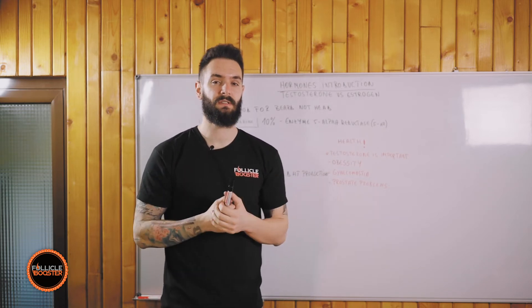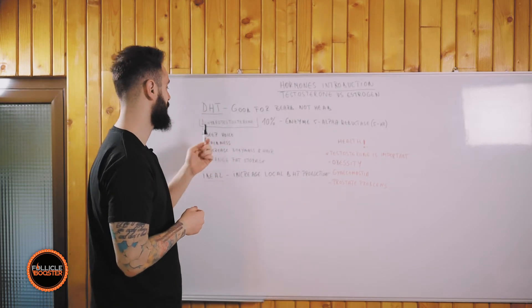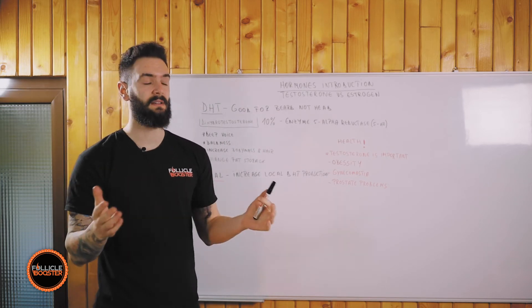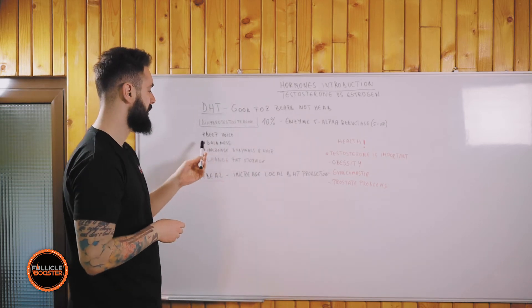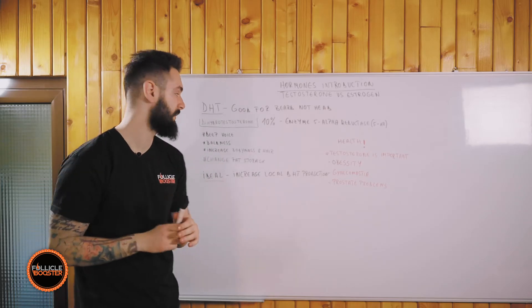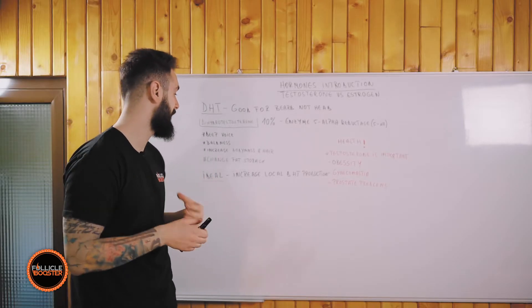You're going to understand why in the further videos, but now let me explain a little bit more in depth about DHT. The main characteristics of testosterone and DHT are a deeper voice, you start going bald - the more testosterone that converts to DHT, the faster you're going to get bald - increase in body mass, and hair over the body, chest hair, back hair.